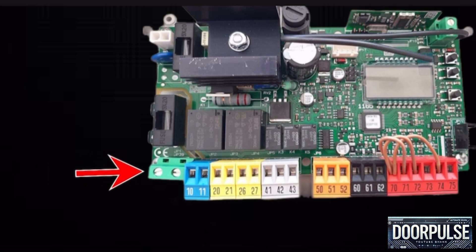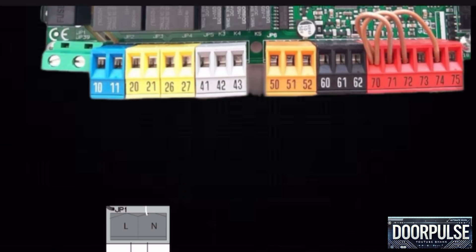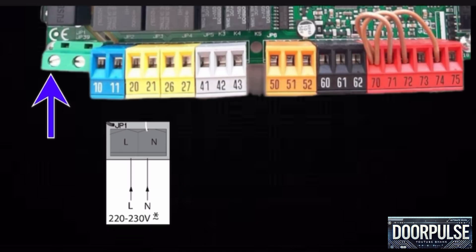JP1 block: JP1 block for main power supply of the control box. L connects to the live wire of the 220-230 volt AC power supply and N connects to the neutral wire.